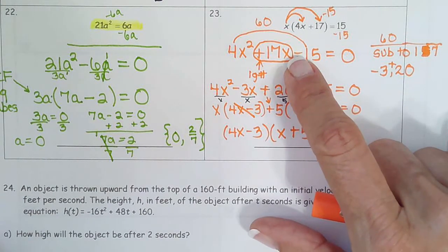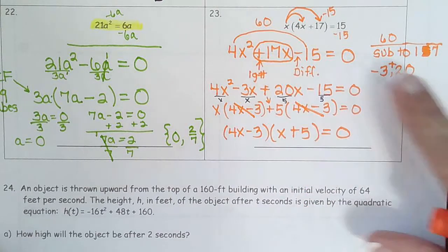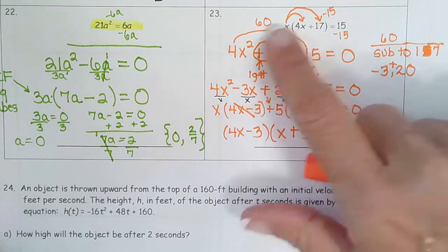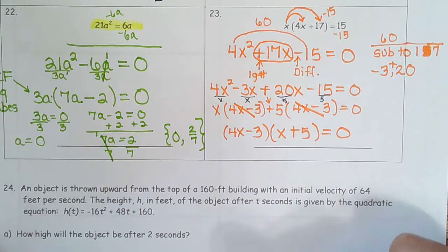This tells me it's going to be one of each sign. This tells me to make the larger one positive. So I made 20 positive, 3 negative. I like to list my negative first so I take this out and in this place I'm going to write negative 3x plus 20x.